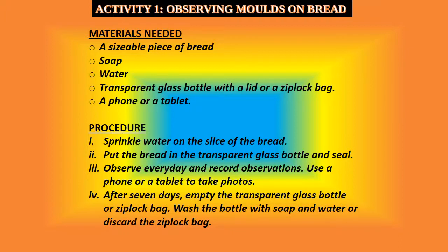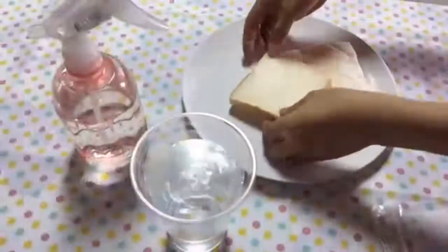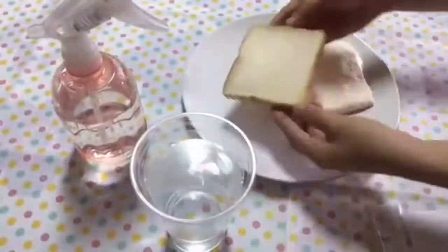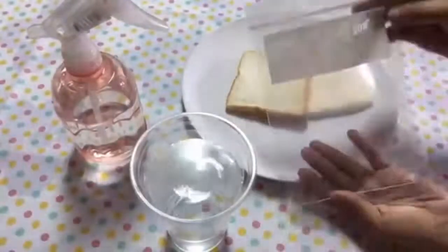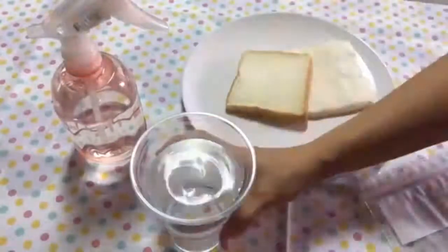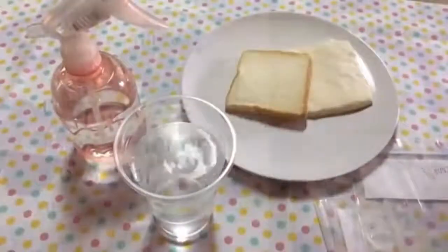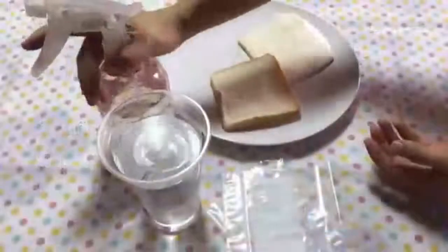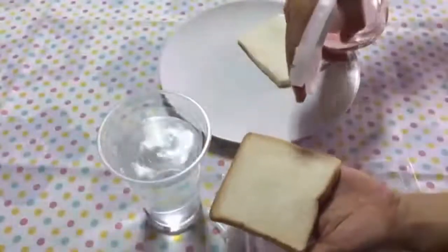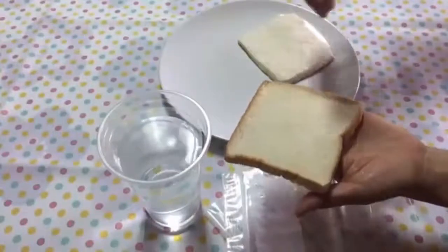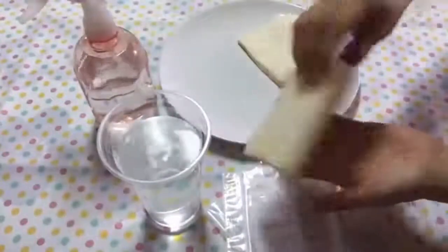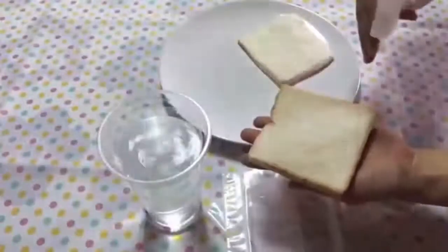Step 4: After 7 days, empty the transparent glass bottle or ziplock bag, wash the bottle with soap and water, or if the ziplock bag was used, discard it. The video which is playing shows the activity being conducted. We have a glass bottle, a slice of bread, a ziplock bag, and a sprayer. We spray water on the slice of bread. After spraying, we put the slice of bread into the ziplock bag, then seal it.